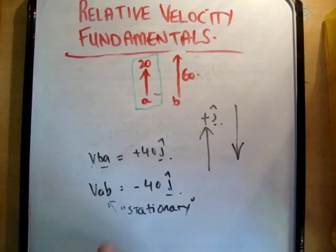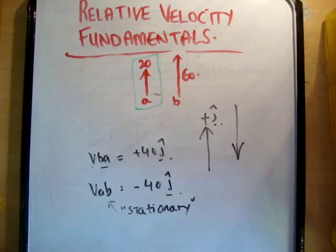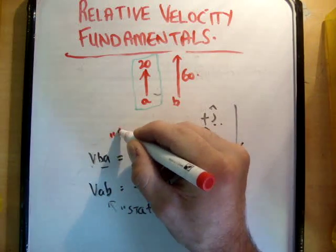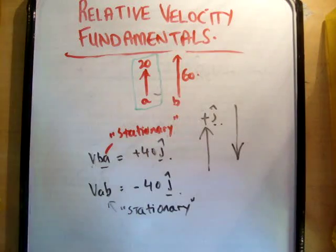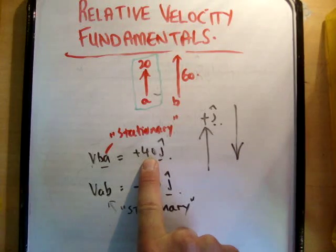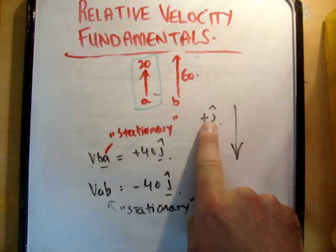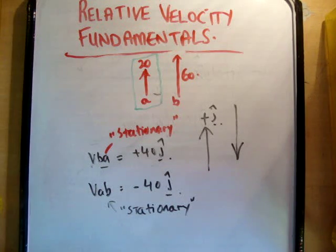Whereas, the other way around, if we had VBA, the velocity of B relative to A, A in this case is the one who can believe he is stationary. And he believes that car B is moving at 40 meters per second in the positive J, which is exactly right. Which is what you would see. If I was being overtaken by a car moving faster than me, and I thought I was stationary, it would look that the car is moving in the plus J direction by its relative speed, or its relative velocity.